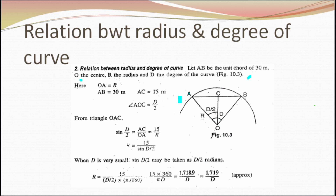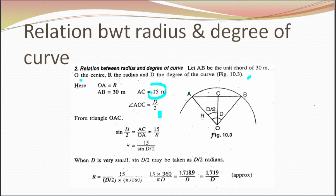So OA equals R, and A to B equals 30 meters. By dividing AB in two, we get AC = 15 meters. Similarly, the degree of curve divided by two gives D/2. So the angle AOC equals D/2.